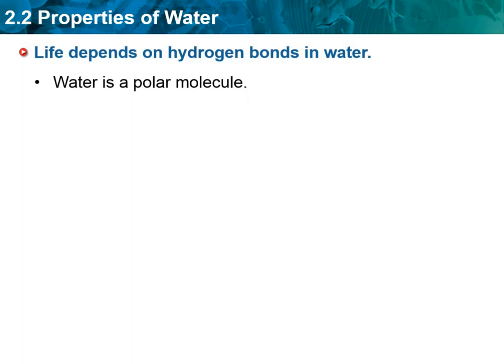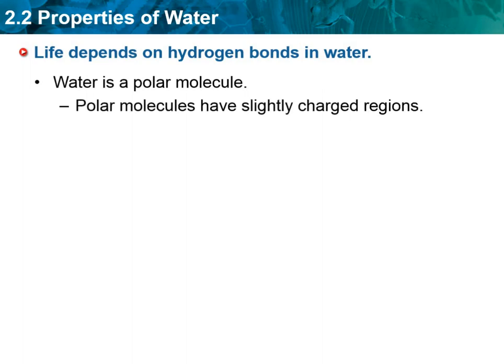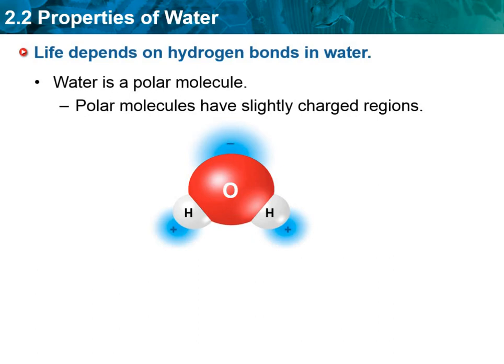Water is what's known as a polar molecule. Polar molecules have a slightly charged region, so there's going to be a positive and a negative end of the molecule. This water molecule has the negative on one end and the positive on the other. The electrons are going to spend a little bit more time around the oxygen than the hydrogen, so that's why you end up with a slightly negative charge and a slightly positive charge on the opposite ends.